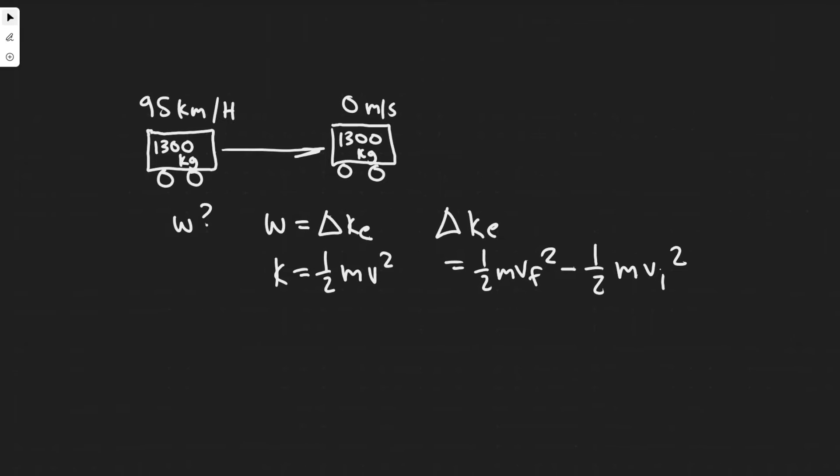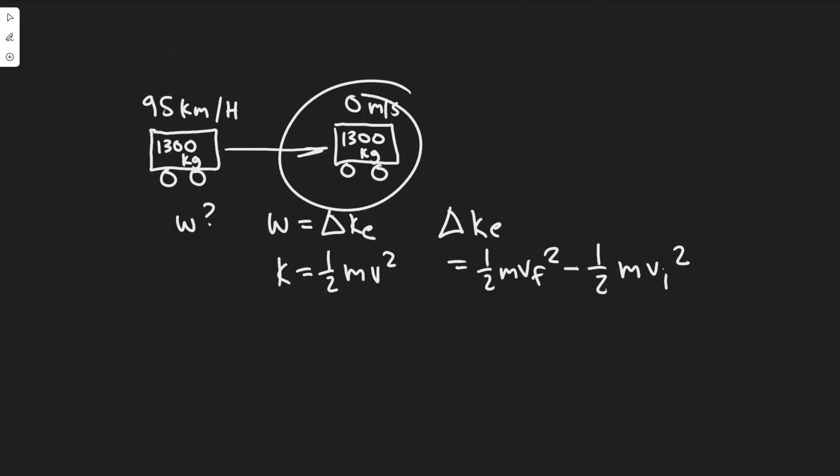You should notice that the velocity at the end is zero. So really, the change in the kinetic energy is just minus 1 half mv initial squared. This is because this is zero, so this whole term becomes zero. The work equals minus 1 half mv initial squared.